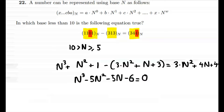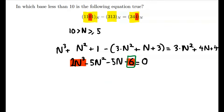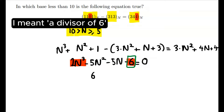Rather than factorizing this equation we can use the rational root theorem to solve it. The rational root theorem states that the roots of a polynomial with integer coefficients must be divisors of the constant term divided by the coefficient of the leading term. The coefficient of the leading term is 1 and the constant term is 6, so the only value of n satisfying our inequality and also being a divisor of 6 is n = 6. So this is our final answer.